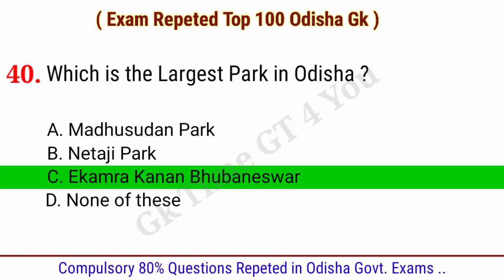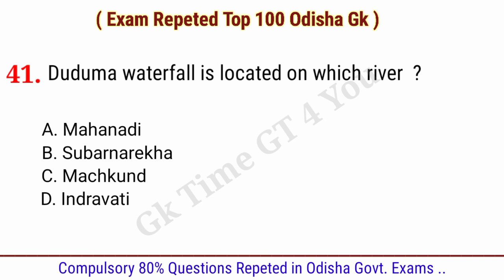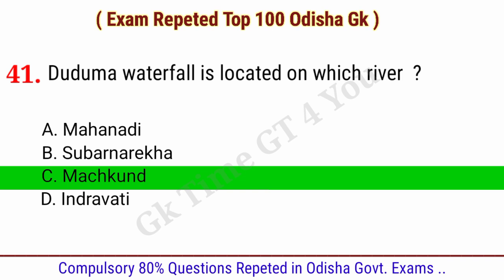Question number forty-one: Duduma Waterfall is located on which river? Right answer, option C: Machkund River.